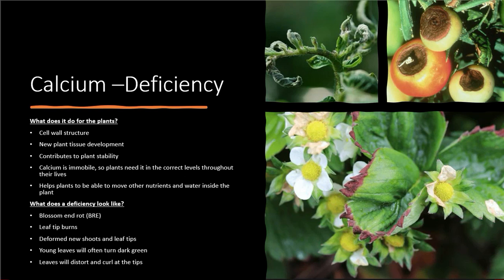What does the deficiency look like? Blossom end rot is something that a lot of people will see on their tomatoes and other fruiting plants — it's a telltale sign. Some people argue it's potassium, but it's not — it's calcium. Potassium causes other issues on the plant or fruit, so we'll look at that eventually, but blossom end rot is what we're seeing here.